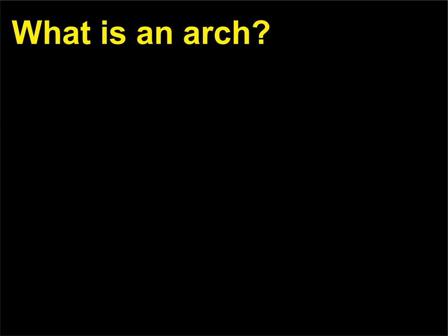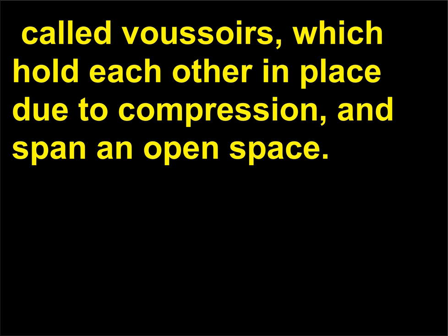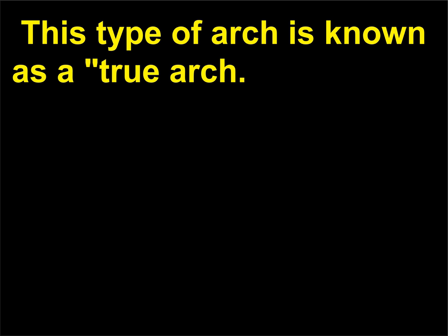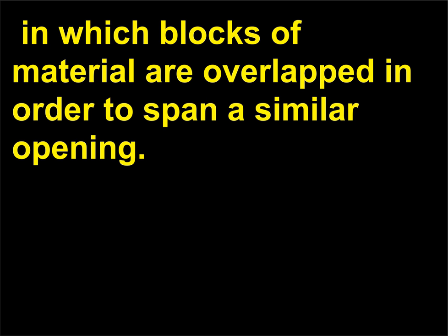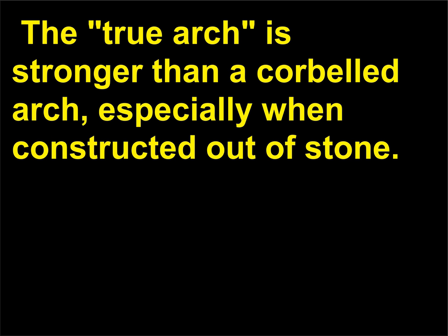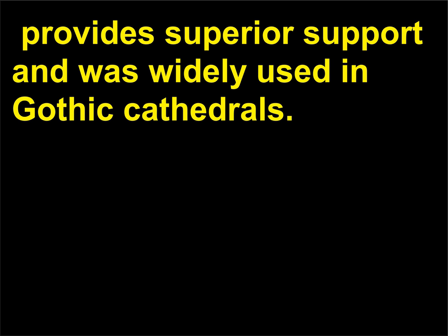What is an arch? In art historical terms, an arch is a semicircular construction of blocks of material called voussoirs, which hold each other in place due to compression and span an open space. This type of arch is known as a true arch. Other simple forms include the corbelled arch, in which blocks of material are overlapped to span a similar opening. The true arch is stronger than a corbelled arch, especially when constructed out of stone. The pointed arch, rather than the round arch, provides superior support and was widely used in Gothic cathedrals.